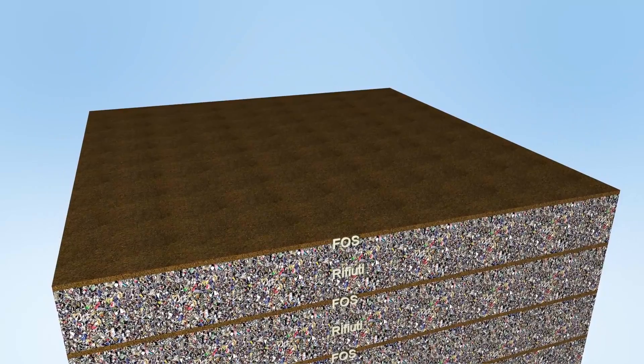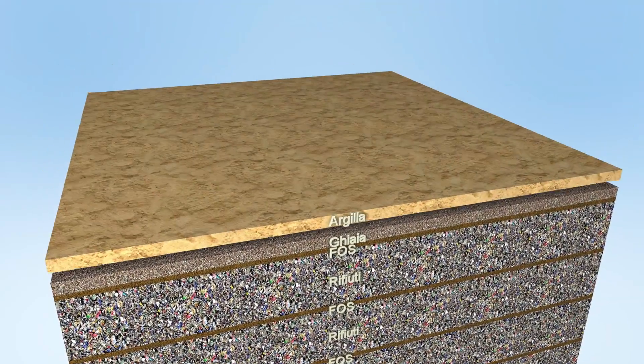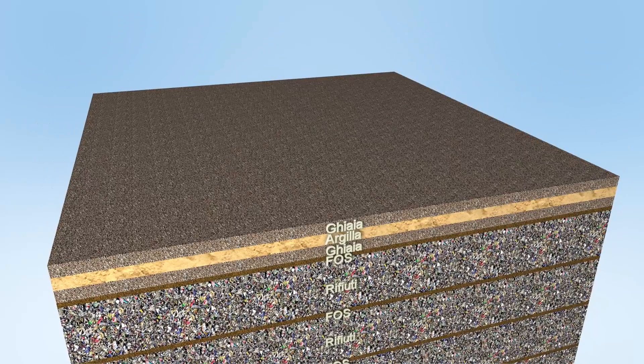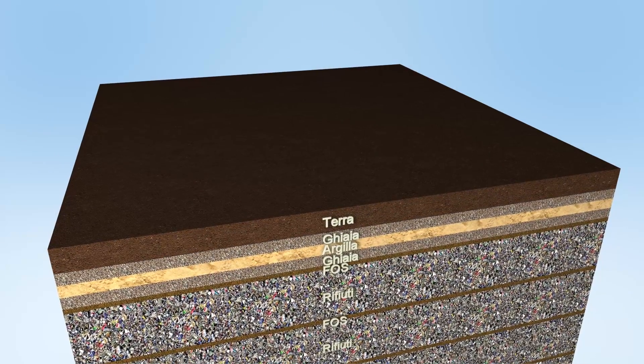When the landfill is filled up, it is completed with a capping made up of layers of clay and gravel, then covered by soil with plants and shrubs.